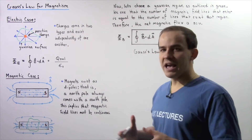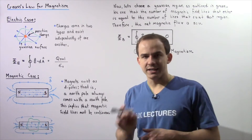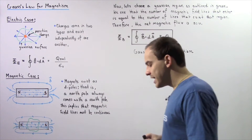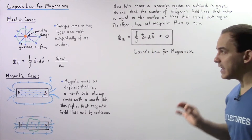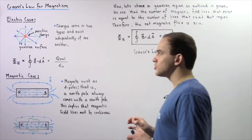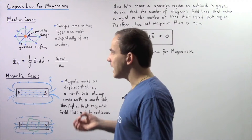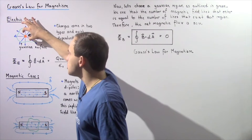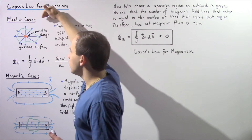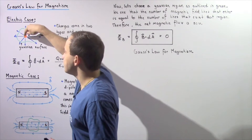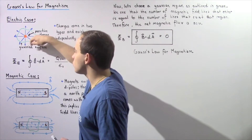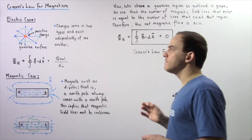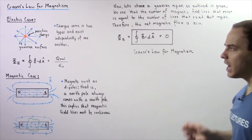Let's suppose we have the following isolated positive charge as shown by the following orange region. Anytime we have a positive electric charge, the electric field lines produced by this positive charge will begin on the charge and will extend outward, as shown by the following blue arrows. These blue arrows signify the direction of our electric field lines.